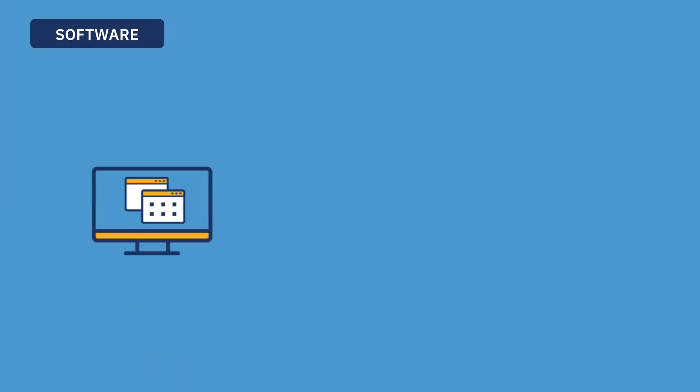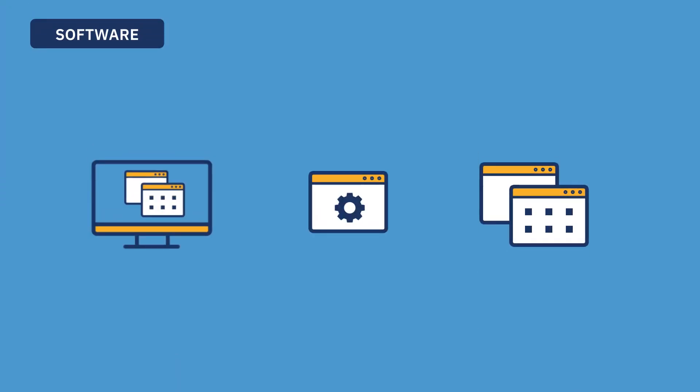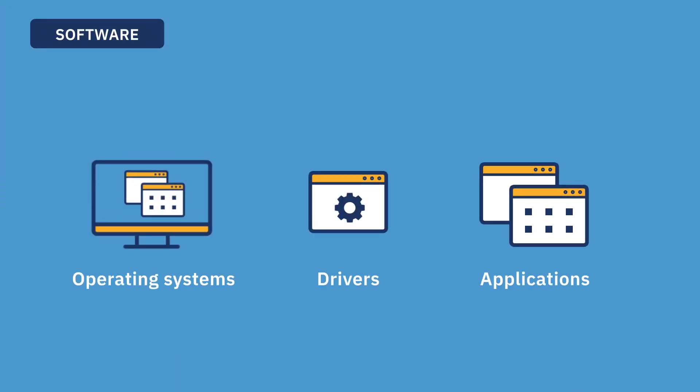All these peripherals need software to run, which leads us into the next topic: software. Software in computers comes in three levels — your operating system, your drivers, and your applications.